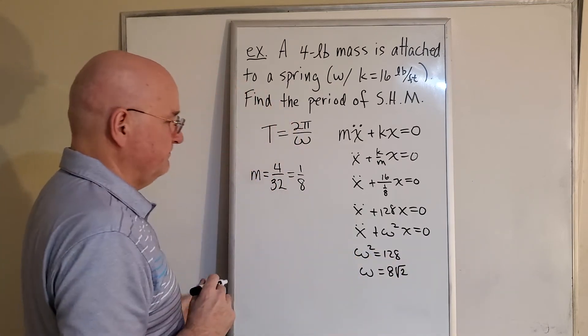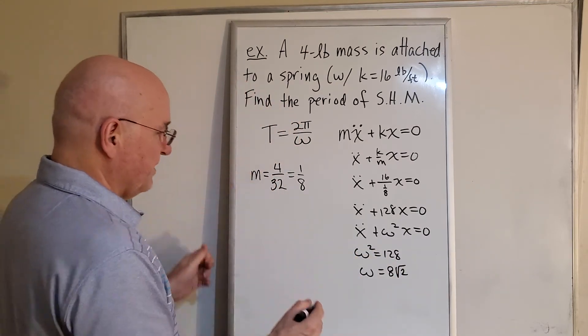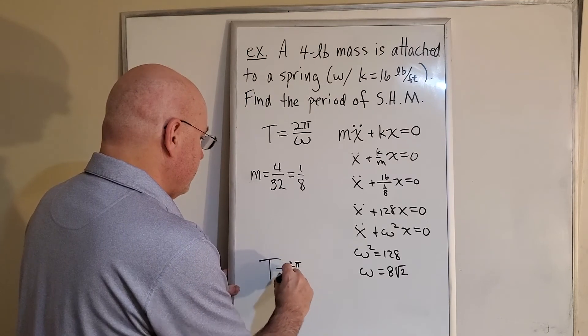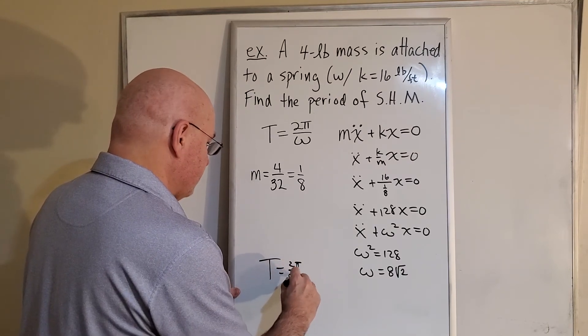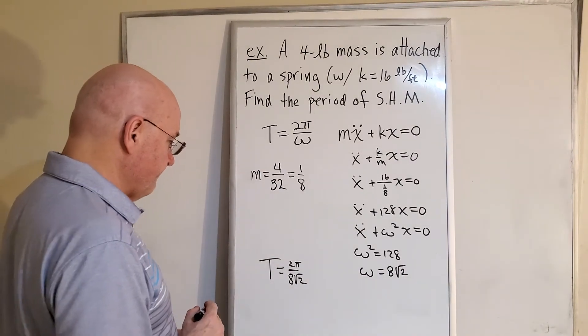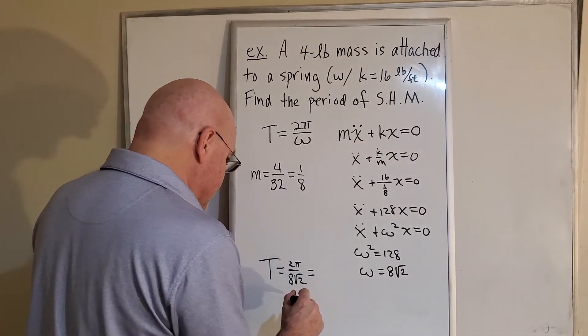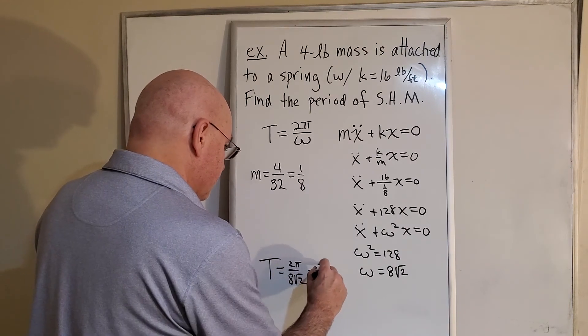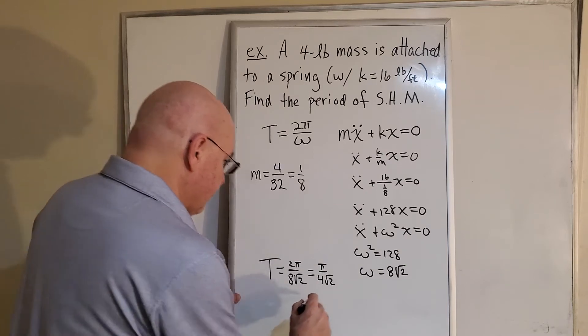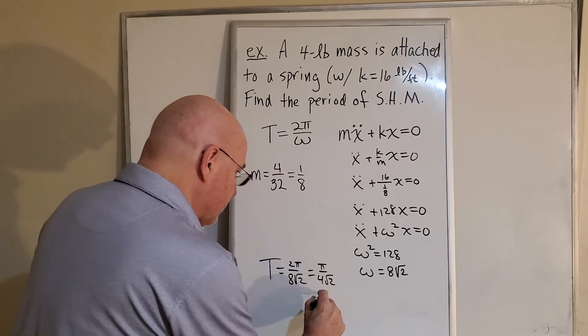But we don't like to leave things like that with the radicals in the denominator. So that would be—let me get rid of the 2 over 8, and then I'll multiply top and bottom by √2. So I get π√2 on top